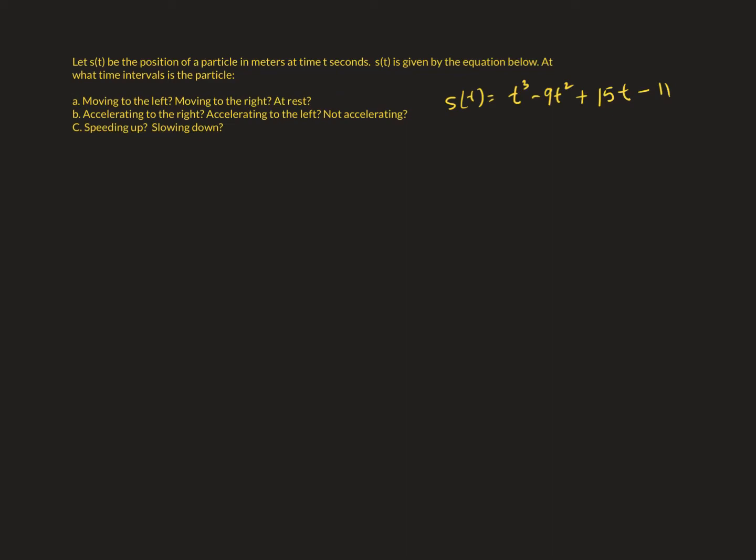Alright, so we spent some time last time talking about straight line motion. We did a lot of problems that involved graphs and how to interpret the graph of position and velocity. What we're going to do today is talk about how to interpret those same things but without having the graph in front of us. This is a skill that will be assessed on the AP exam quite a bit.